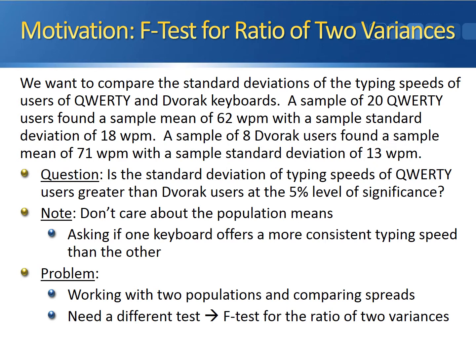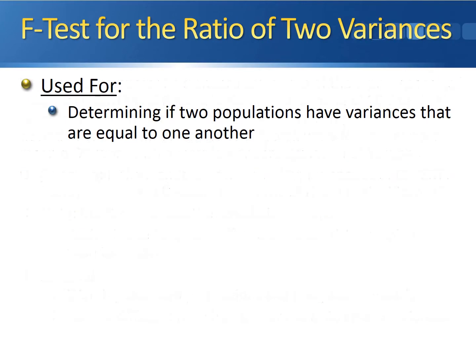We need a different type of test. That test is the F-test for the ratio of two variances. The F-test for the ratio of two variances is used to determine if two populations have variances that are equal to one another.